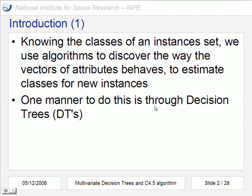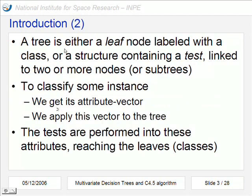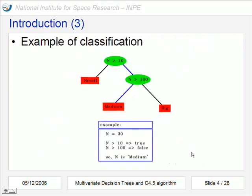One way to do this is through decision trees. A tree is either a leaf when the node is labeled with a class or can be also a structure containing a test that is linked or connected to two or more nodes that we call subtrees. When we want to classify some instance, we have to get its attribute vector and apply this vector to the tree. We reach one of the leaves that will be the class to which this new instance belongs.